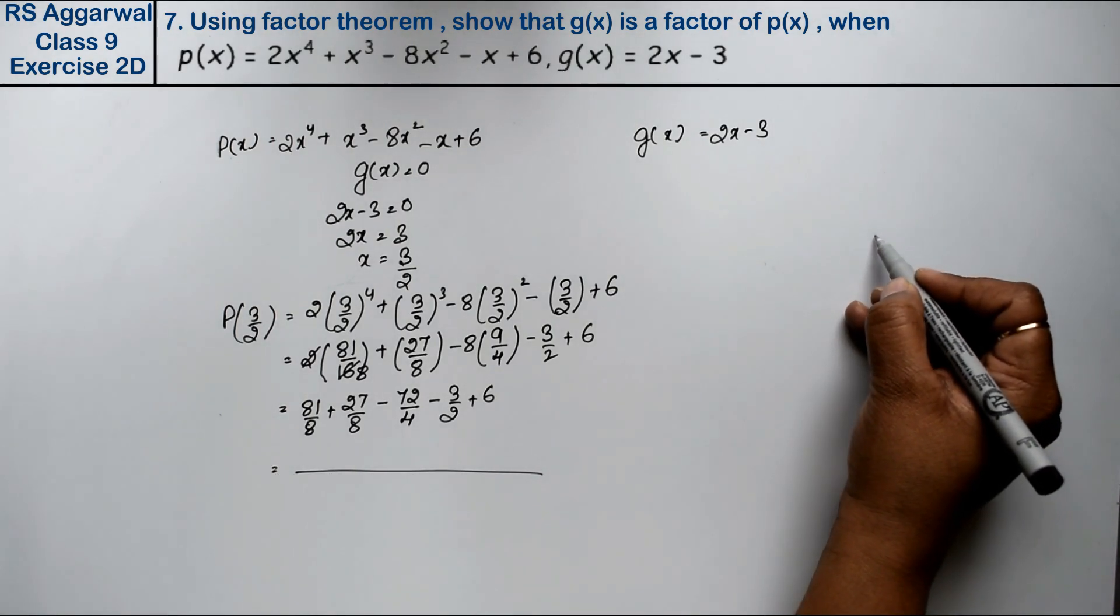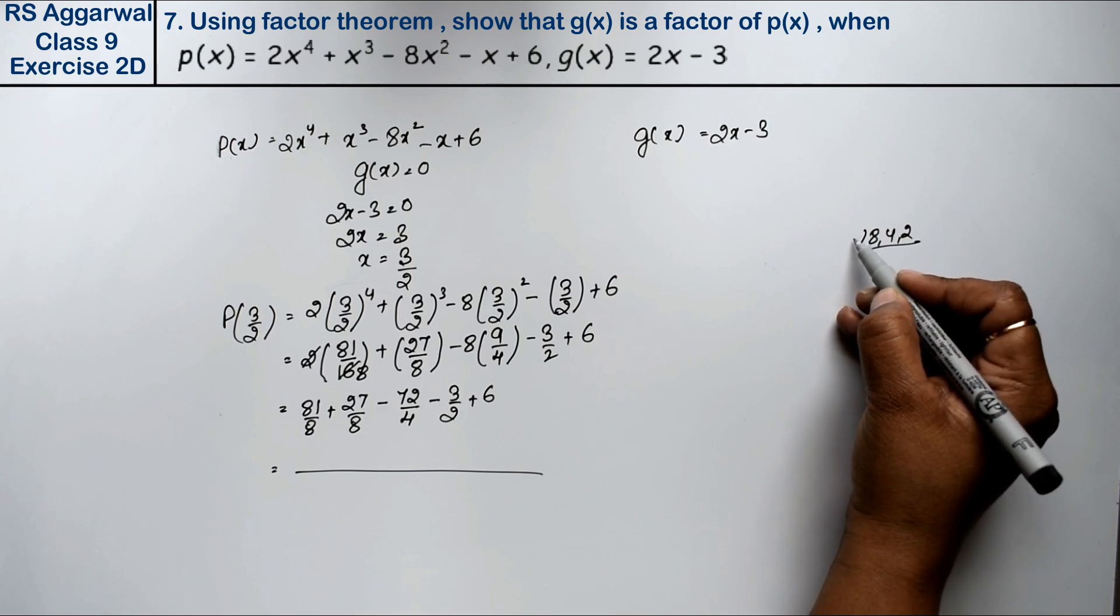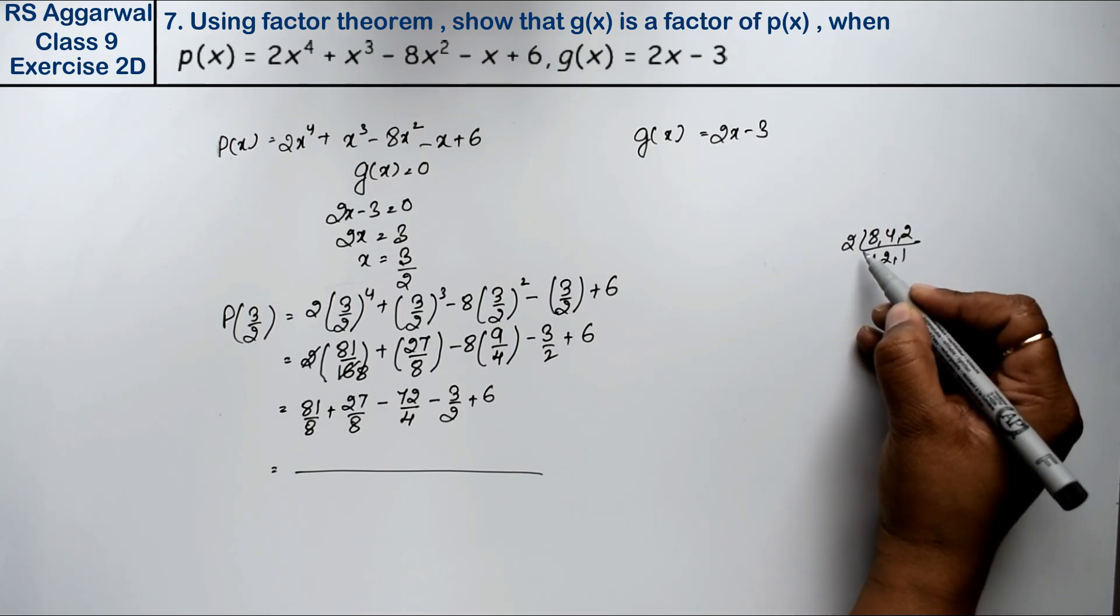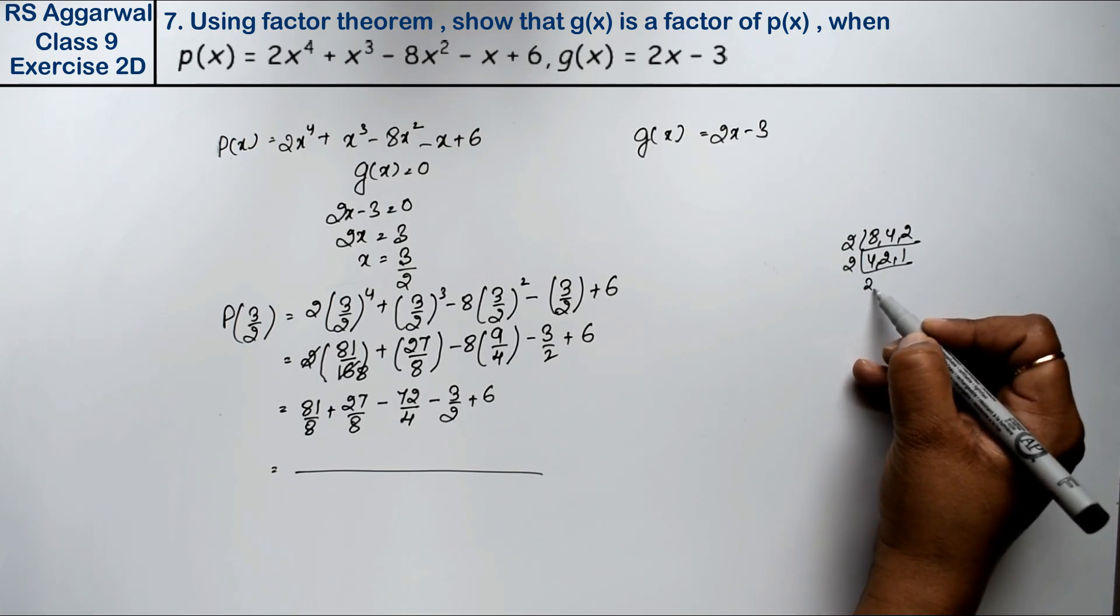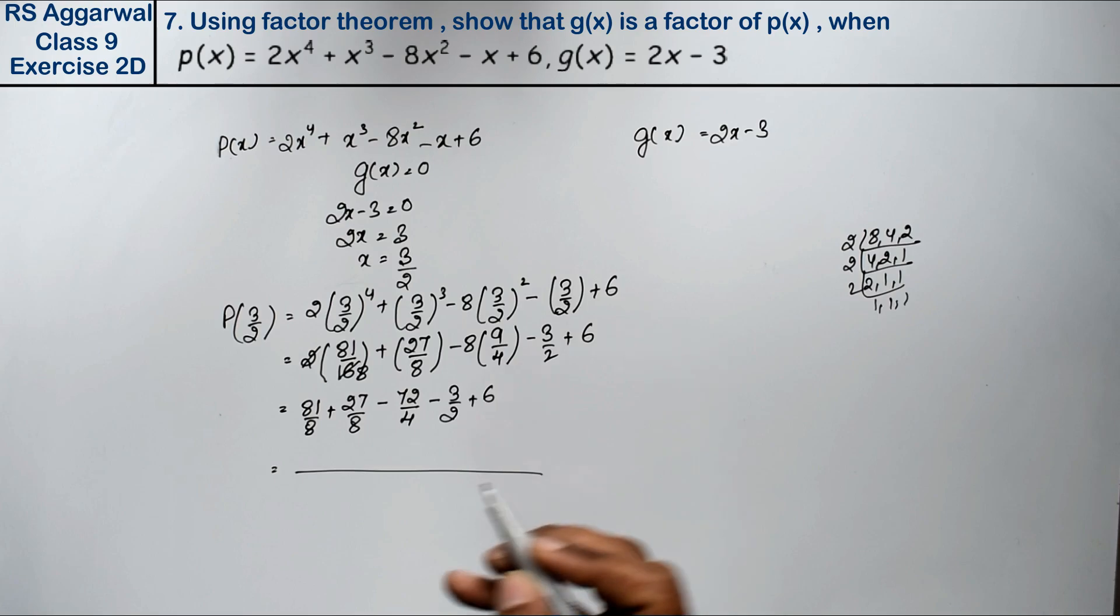We'll take LCM of 8, 4 and 2. See here? 2 times 4 is 8, 2 times 2 is 4 and 1. 2 times 2 is 4, 1 and 1. Again 2, 1, 1 and 1. We get 8.